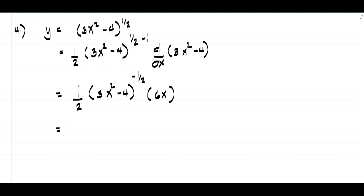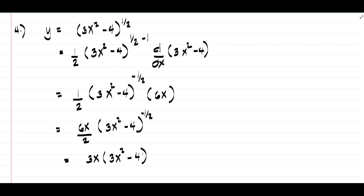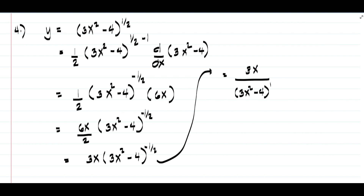So we have 1 times 6x, that is 6x over 2, times quantity 3x squared minus 4 raised to negative 1 half. We can divide 6 by 2 to give us 3x times quantity 3x squared minus 4 raised to negative 1 half. To eliminate the negative exponent, move 3x squared minus 4 to the denominator, giving us 3x over quantity 3x squared minus 4 raised to positive 1 half, or equivalently 3x over the square root of 3x squared minus 4.